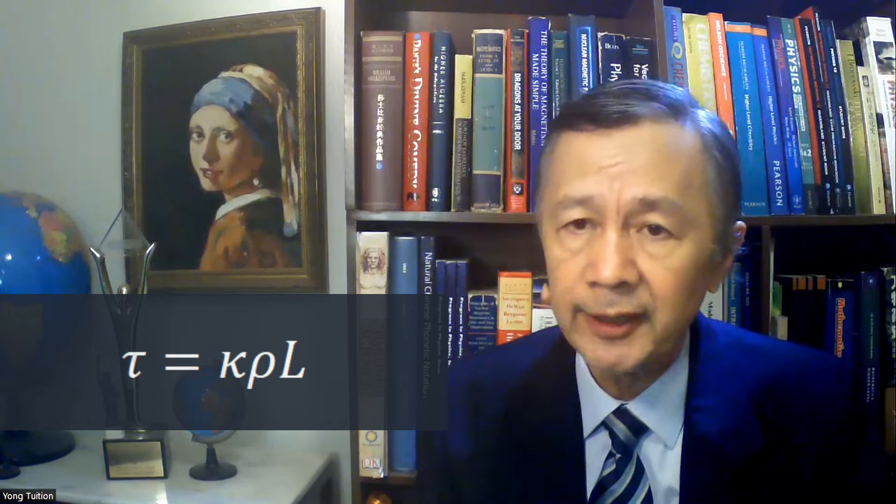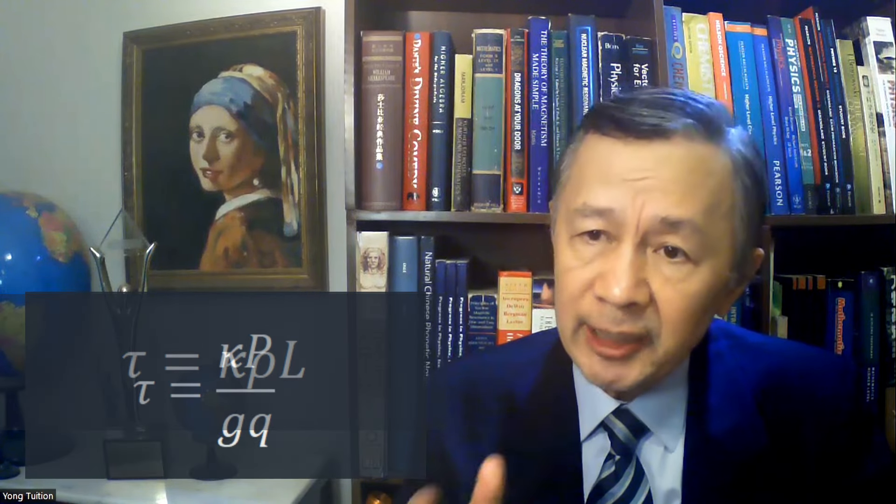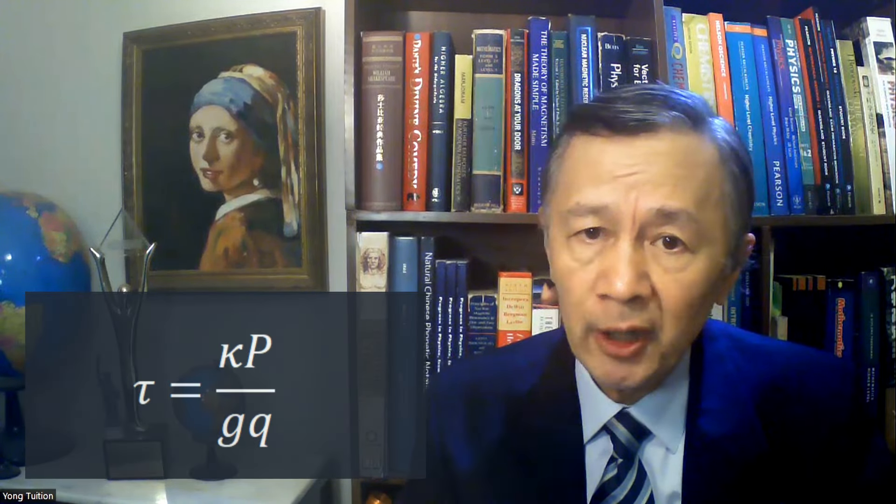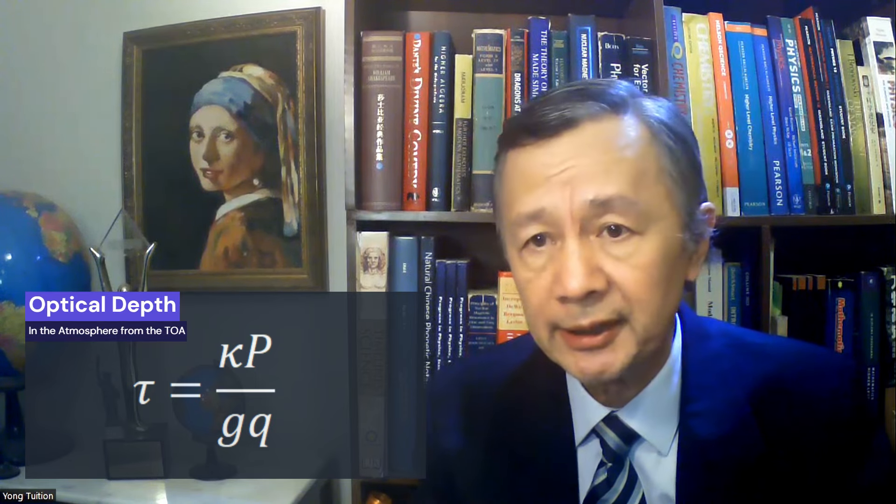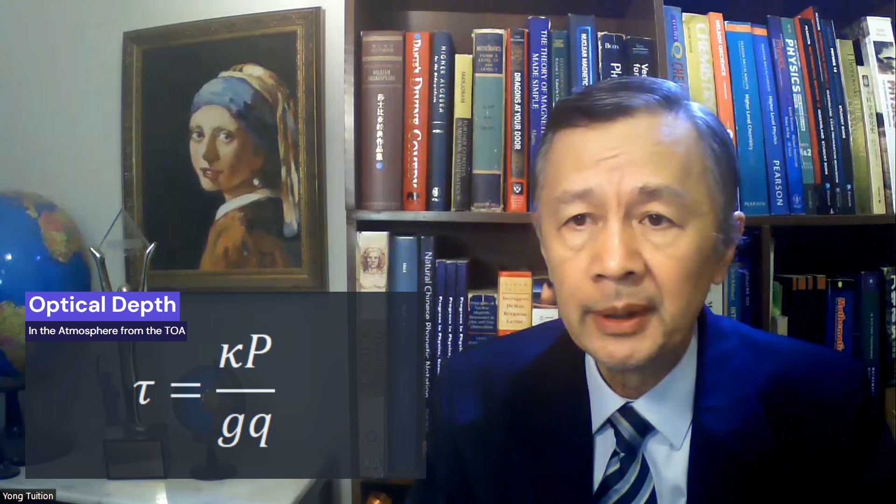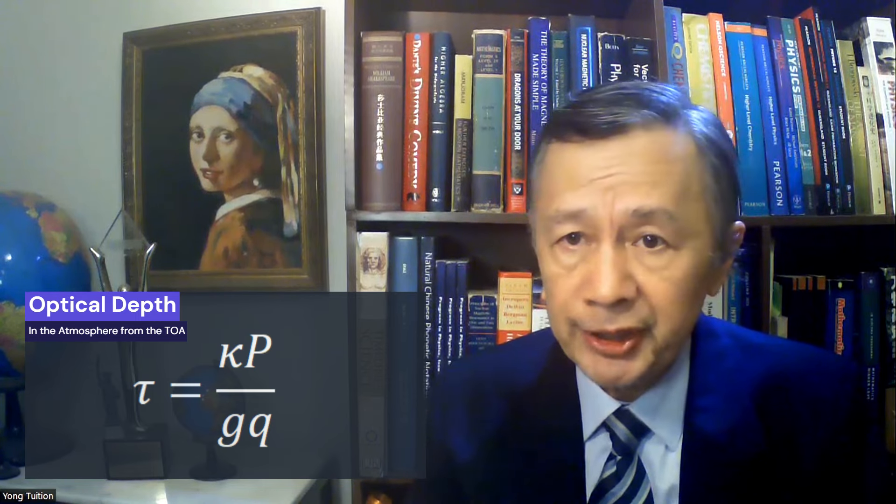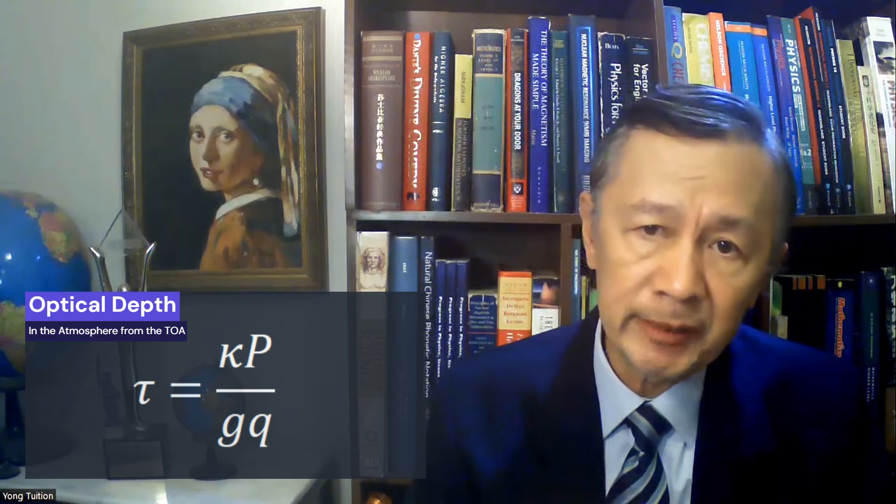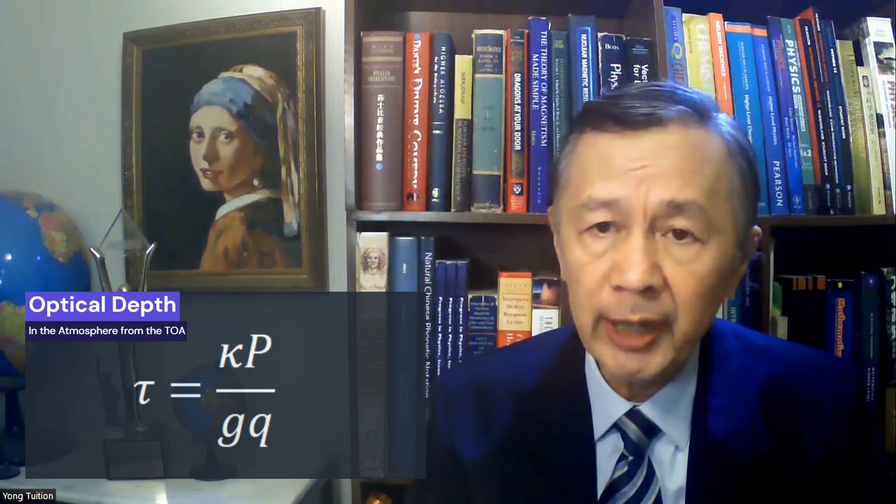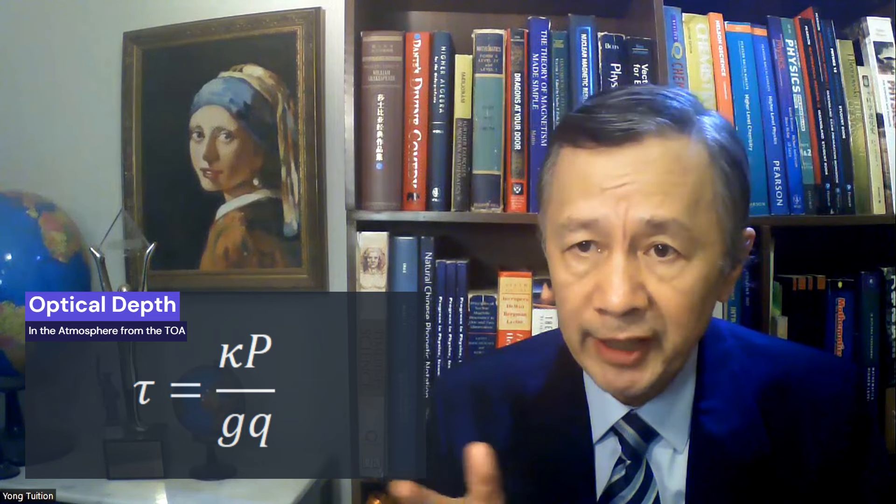Where kappa is absorption coefficient or mass absorption coefficient, rho is the media density, and L is the thickness of the layer. For the atmosphere, the formula for the optical depth looks different, but still not too complicated. Where P is the air pressure, Q is the percentage of CO2 in the atmosphere, and G equal to 9.8 is the gravitational acceleration.